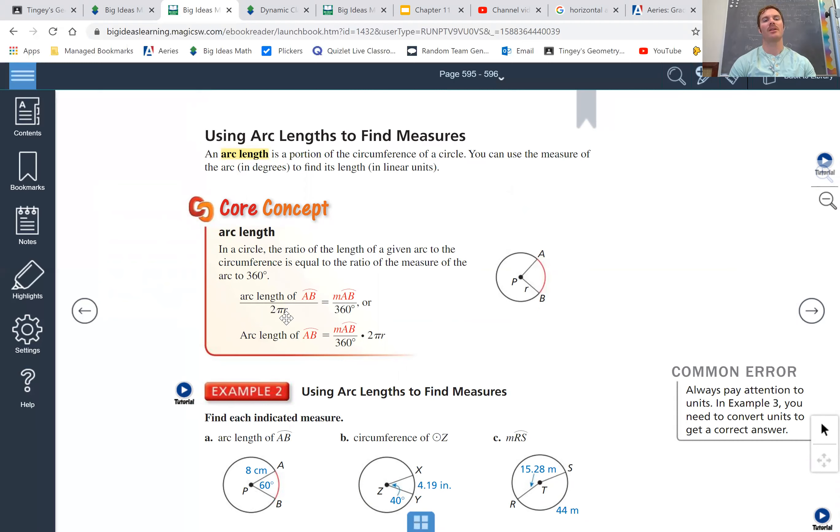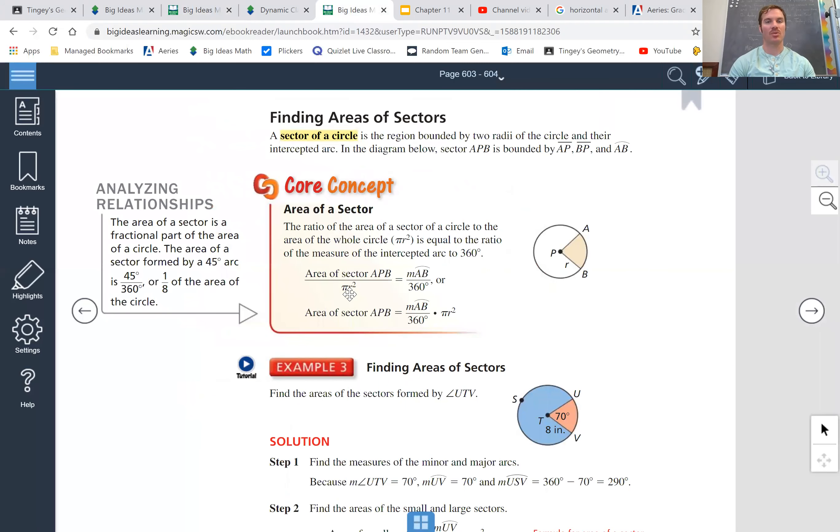Well, this one says 2 pi r, which is talking about circumference, the length. What's this one? Pi r squared. Area. We're talking about the space inside the circle. The area. Okay, that's the difference.